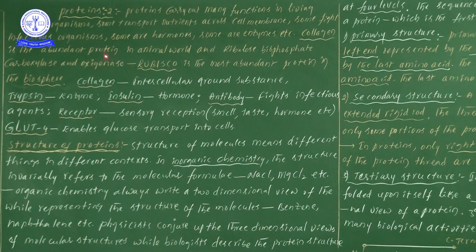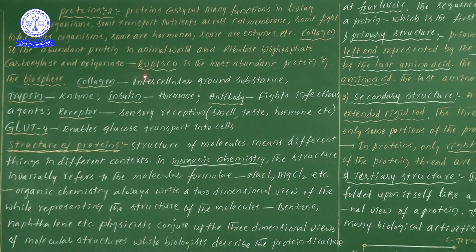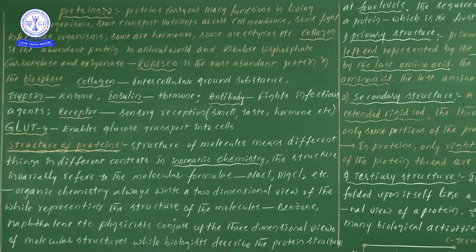One is collagen — collagen is an abundant protein in the animal world. And ribulose bisphosphate carboxylase and oxygenase — that is the enzyme name, simply known as Rubisco. Collagen is an abundant protein in the animal world, whereas Rubisco is the most abundant protein in the biosphere, meaning in plants.